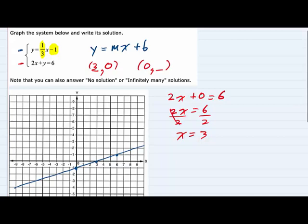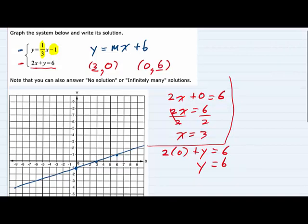Then to find the y-intercept, the second point, we let x equal zero. So this time x is zero. We would have 2 times zero plus y equals six, doing the substitution. So 2 times zero is zero, this is just y equals six. So the second point is zero, six.